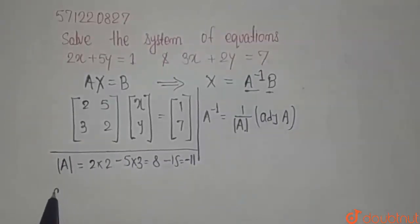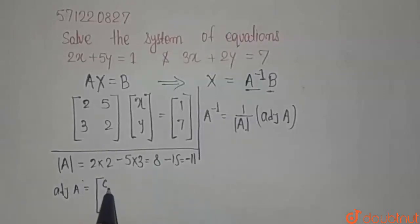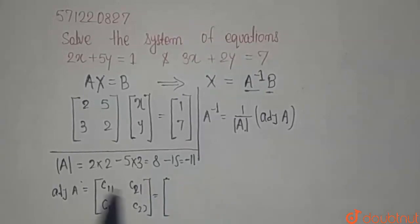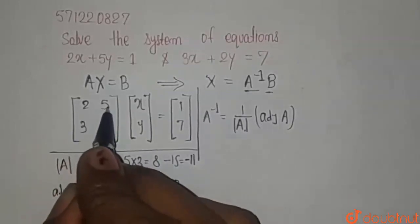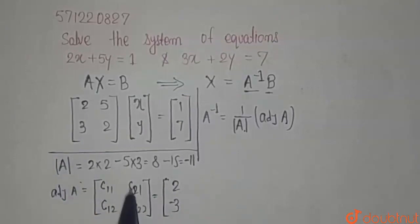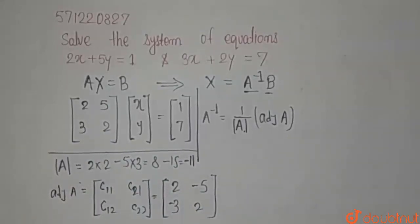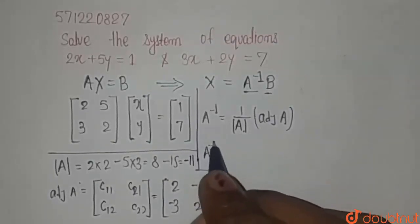Now, the adjoint of A is given using cofactors C11, C12, C21, and C22. We can observe that C11 is 2, C12 is minus 3, C21 is minus 5, and C22 is 2. So we are getting our adjoint of A as this matrix, and we can now state our A inverse.